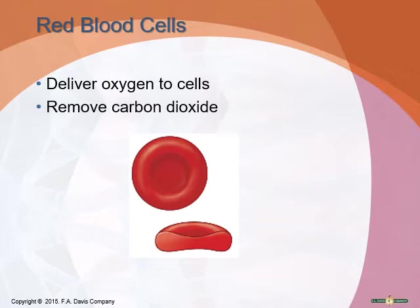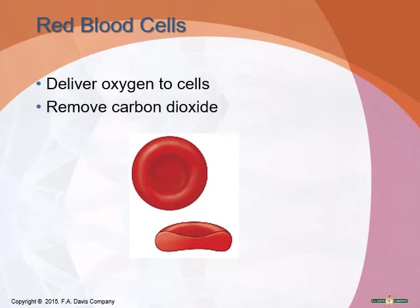Red blood cells, also known as erythrocytes, kind of look like a frisbee golf disc. They have no organelles, no nucleus, no mitochondria, and therefore no DNA, so they cannot replicate themselves. They are squishy and flexible, able to stretch, bend, and squeeze through tight vessels like tiny capillaries. Their primary job is to deliver oxygen to all tissues and remove carbon dioxide through respiration.